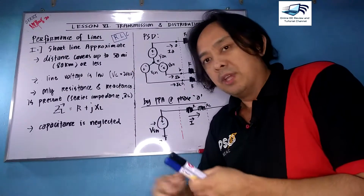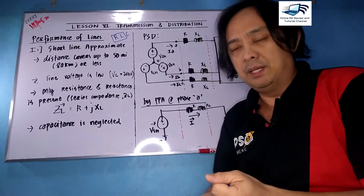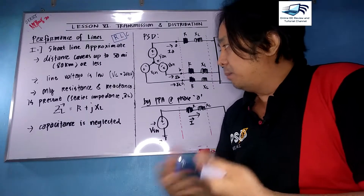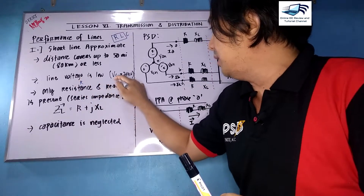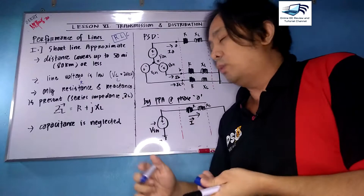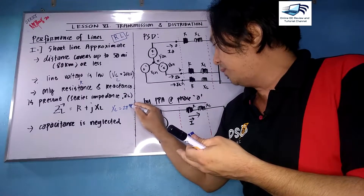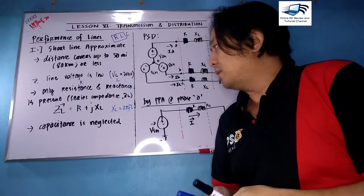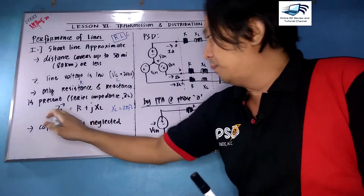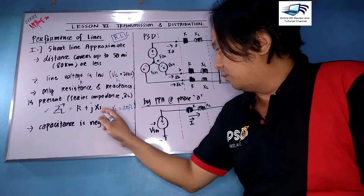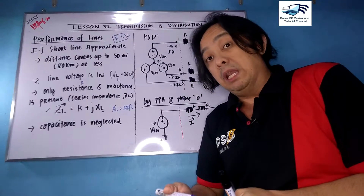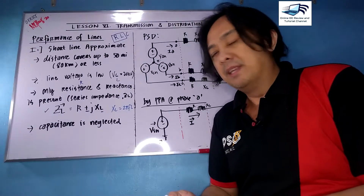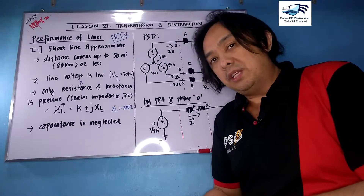The line voltage in this case is very low, approximately 20 kilovolts, though some problems have line voltage up to 33 kilovolts. Only the resistance R and inductance L — converted to reactance by omega L or 2-pi-f-L — are present. This gives ZL, the series impedance, equal to R plus jXL, always positive since it is inductive. The capacitance is neglected because of the lower voltage.